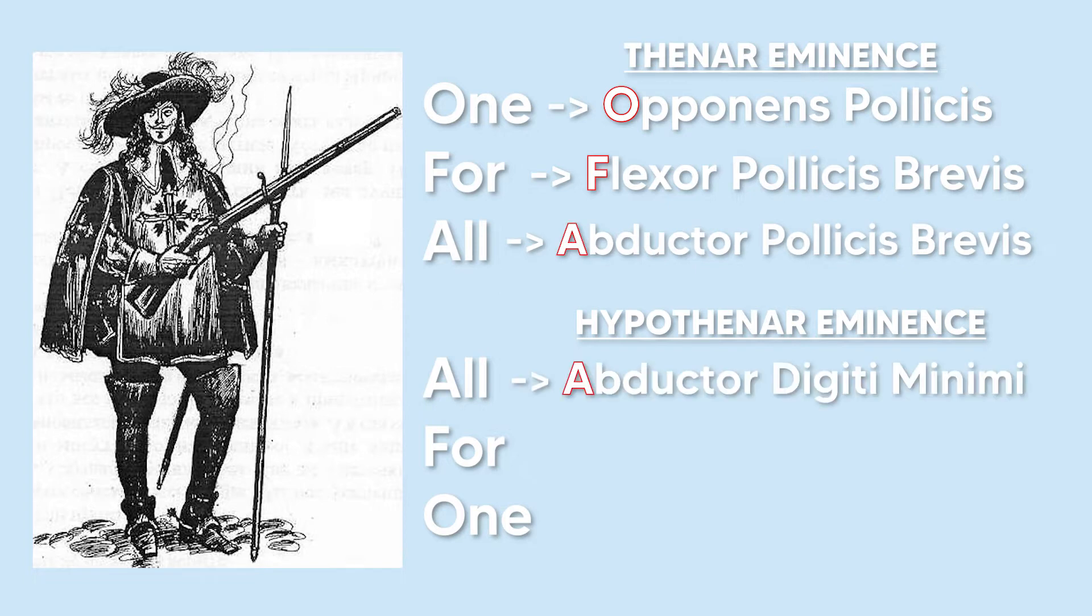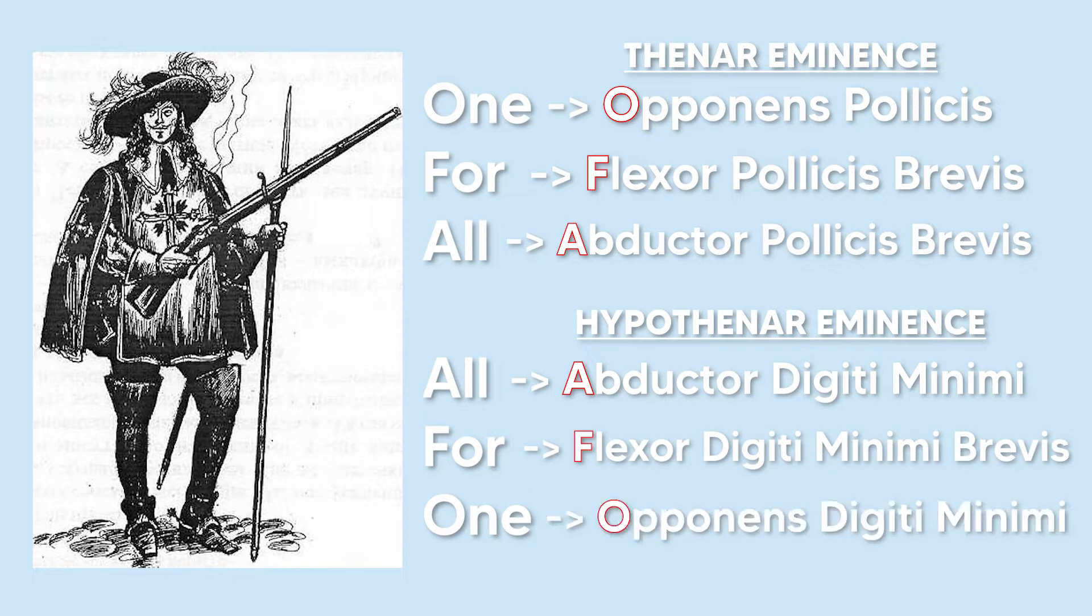All for one could stand for the abductor digiti minimi, the flexor digiti minimi brevis, and the opponens digiti minimi. So obviously the order isn't too important here, but it'll just remind you of the six muscles you'll find in these two different areas.